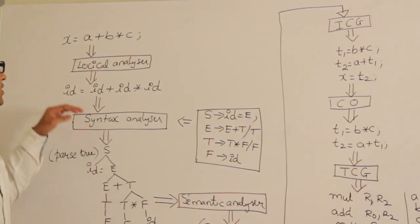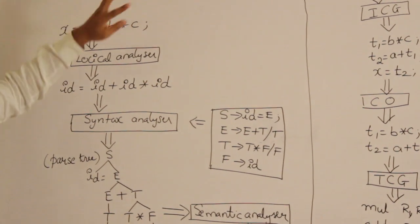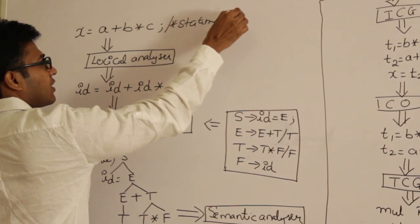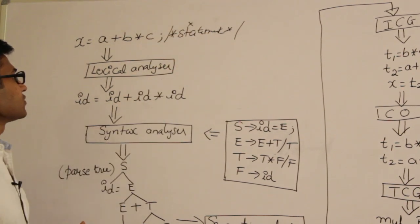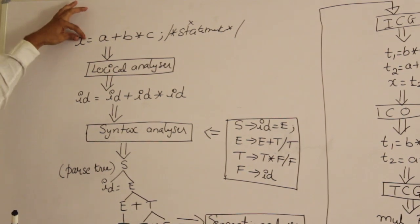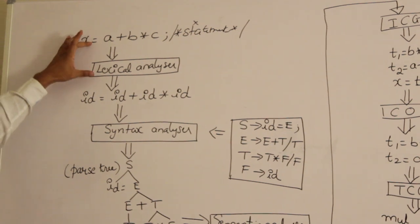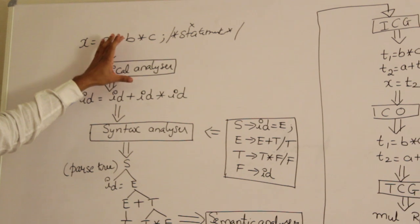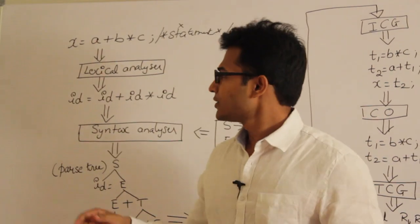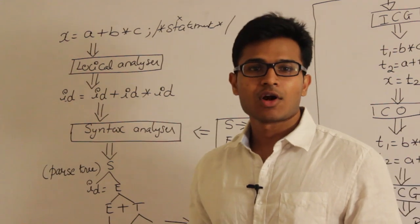Other responsibilities of the lexical analyzer include removing white spaces and comments — if there are any comments, they will be deleted by the lexical analyzer. The main responsibility is converting the stream of lexemes — all these names — into a stream of tokens. For example, x is an identifier, equal to is an operator, a is an identifier, plus is an operator, b is an identifier, c is an identifier.